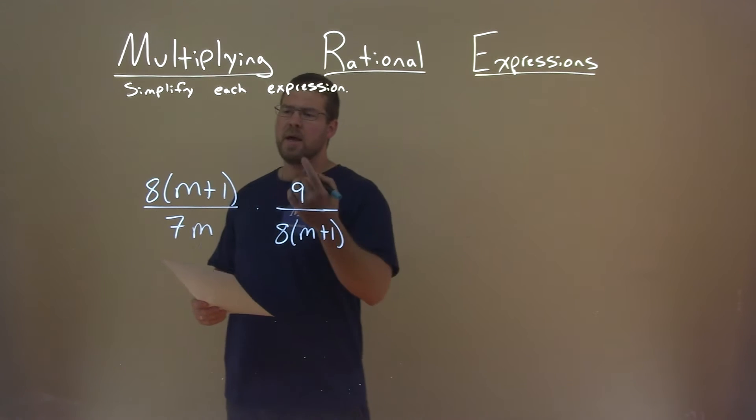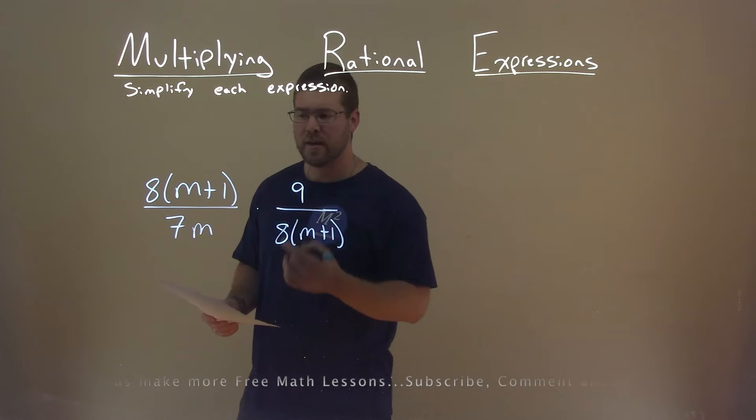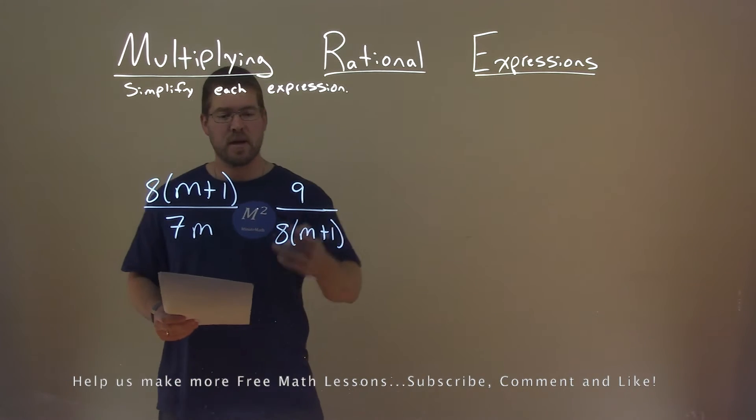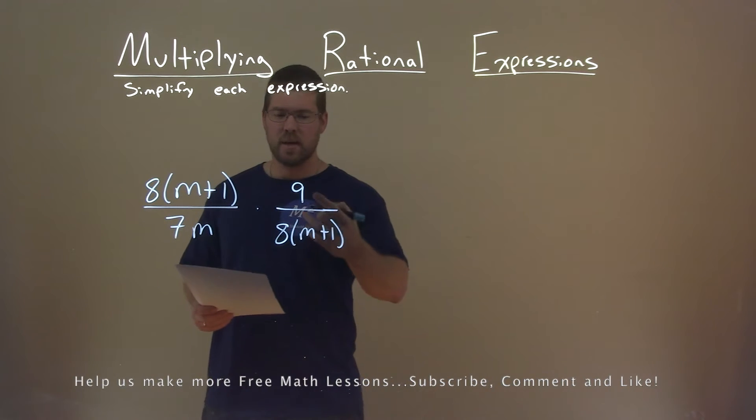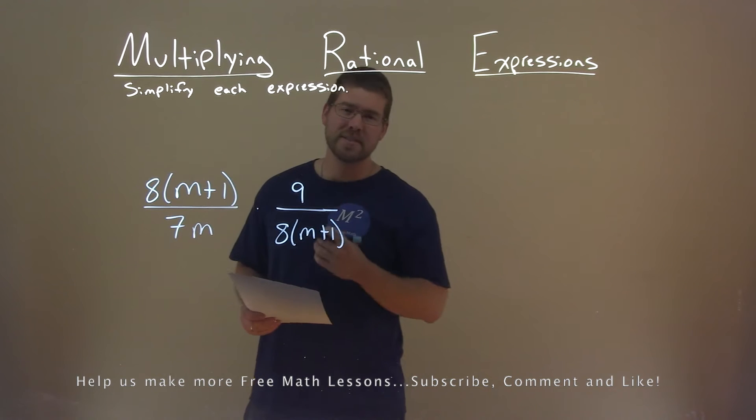We're given this problem right here: 8 times m plus 1 divided by 7m, times 9 divided by 8 times m plus 1, and we want to simplify this expression.